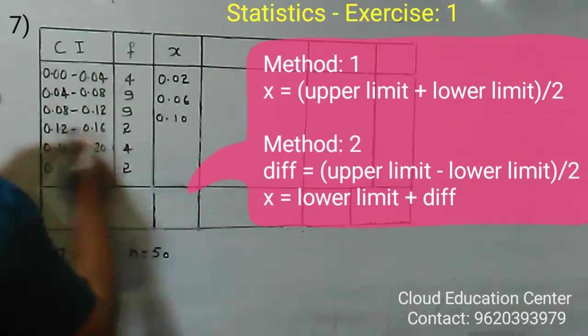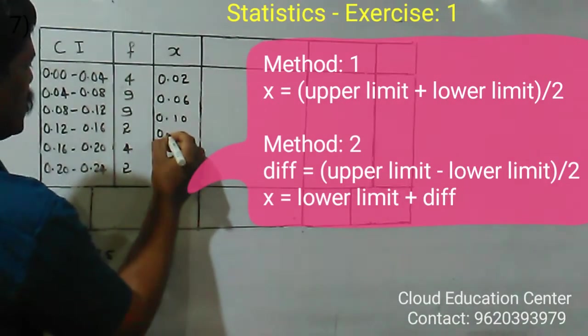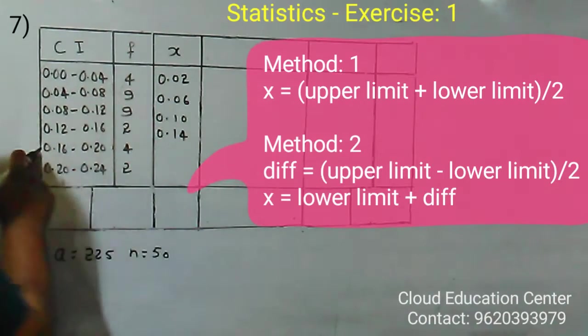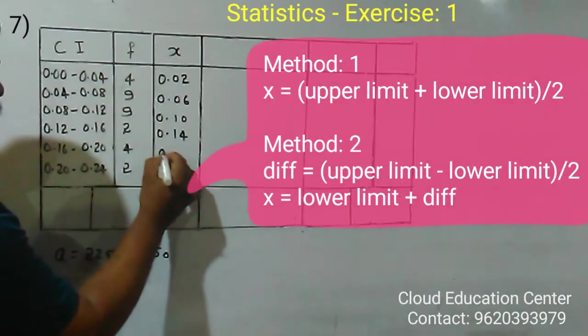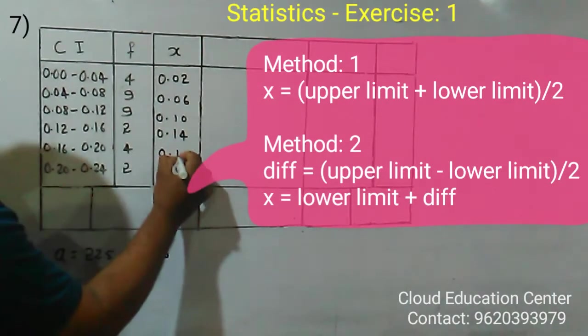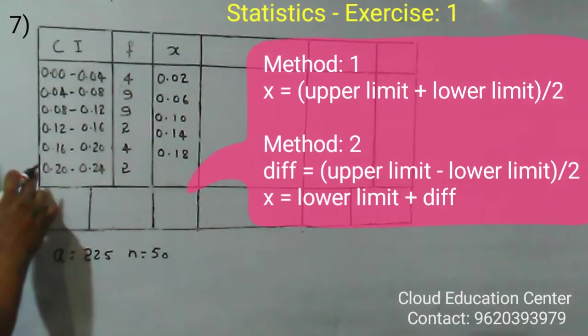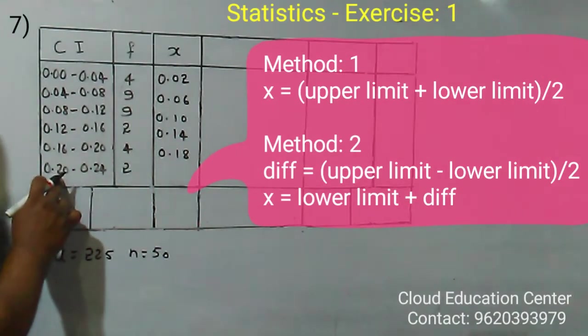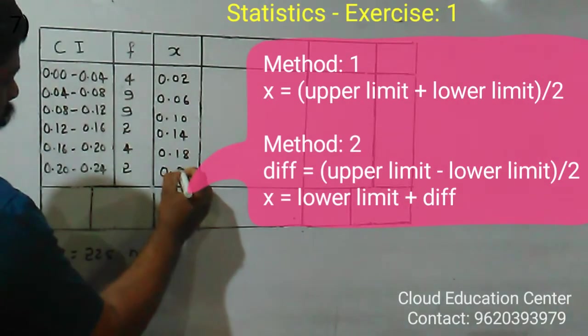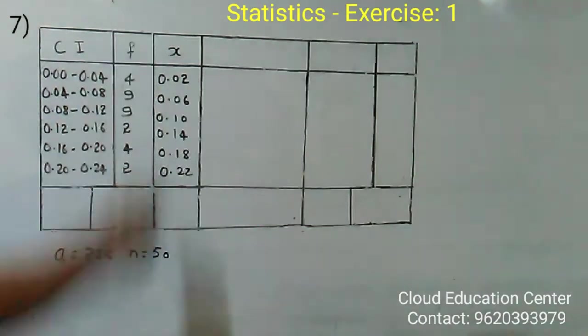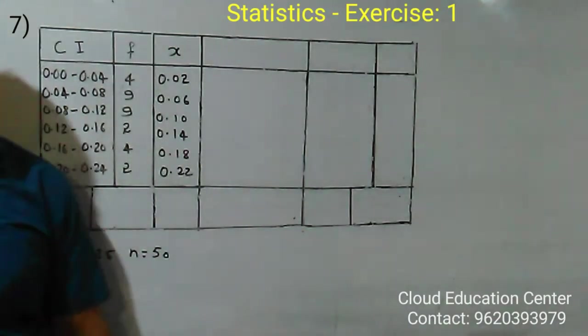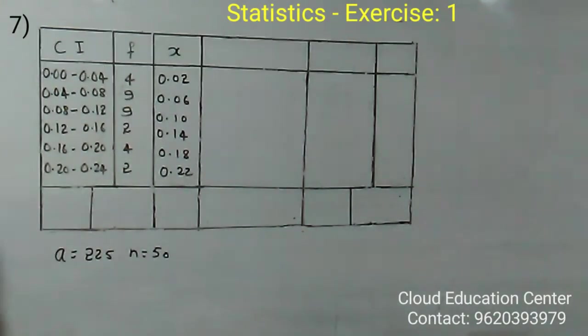Add 0.02 for this one to get 0.14. Add 0.02 to get 0.18. For the last interval, adding 0.02 gives 0.22. So you got the class marks or mid values.